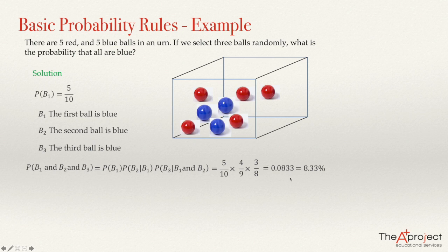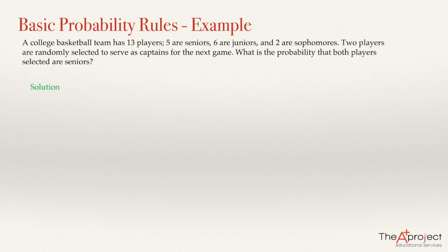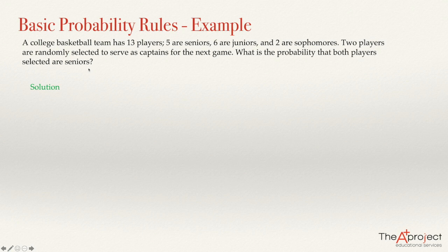In a similar way, any example when we have sampling without replacement is solved like this. For example, consider this problem: a college basketball team has 13 players — five are seniors, six are juniors, and two are sophomores. Two players are randomly selected to serve as captains for the next game. What is the probability that both players selected are seniors?